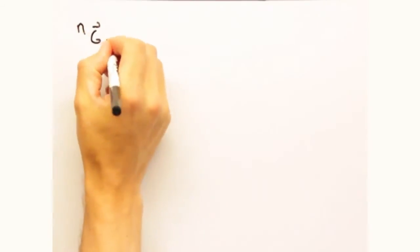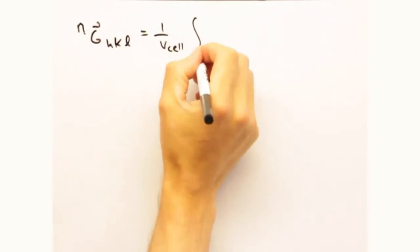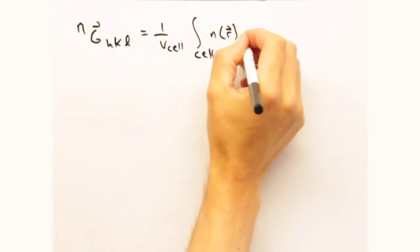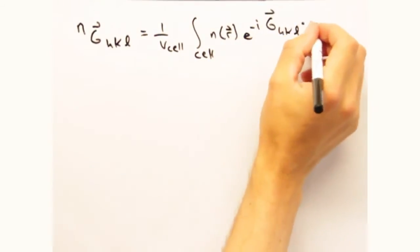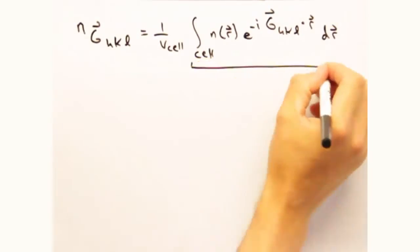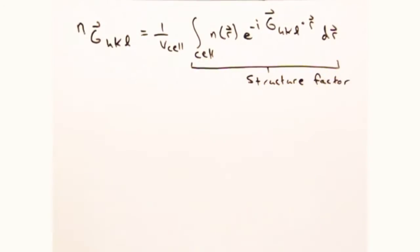But now let's look back at our original equation for n_g_hkl. This integral portion effectively represents the scattering density within one unit cell. And this is what we are going to call the structure factor.